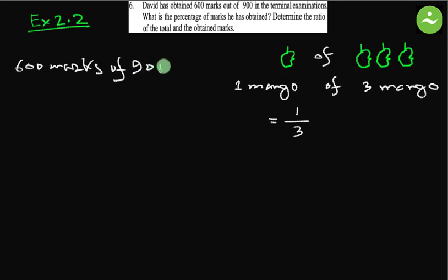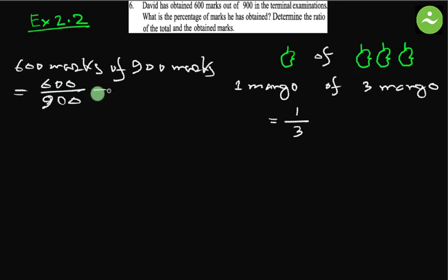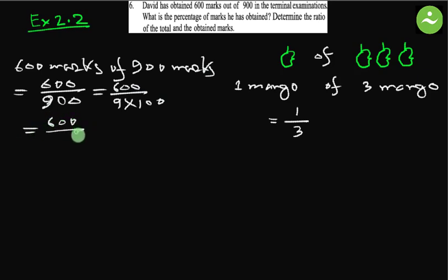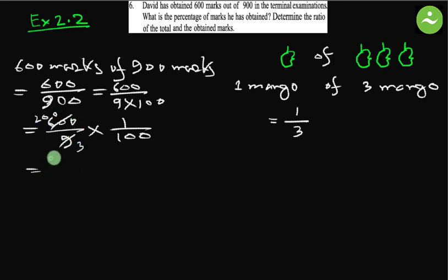Six hundred marks of nine hundred marks equals to 600 by 900. Now we have to express this as a percentage. That means 600 by 900 multiplied by 100 equals to 600 by 9. Separate 1 by 100 because that is percentage. Now simplify — divide both by 3. This will be 200 by 3.